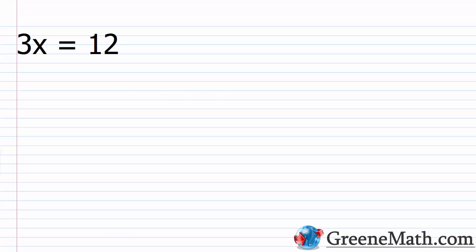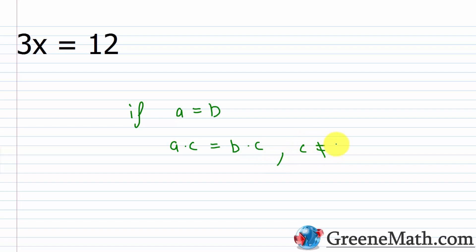We're going to see more complicated linear equations, so we need more tools than just the addition property of equality. In this lesson, we're going to review the multiplication property of equality. This property tells us that we can multiply or divide both sides of an equation by the same non-zero number and not change the solution. If you multiply both sides by zero you get zero on each side, and dividing by zero is undefined, so zero must be excluded. If A equals B, then A times C equals B times C, where C does not equal zero.